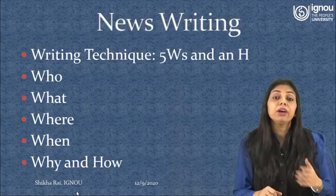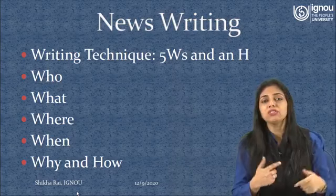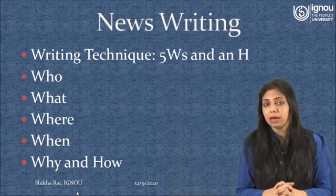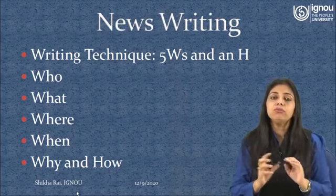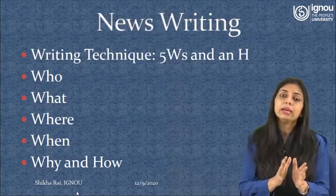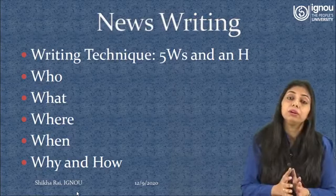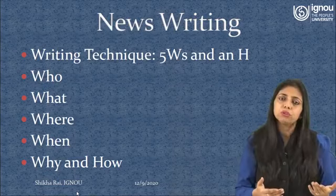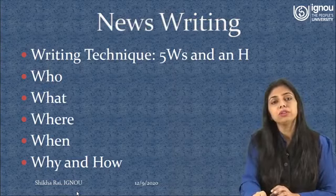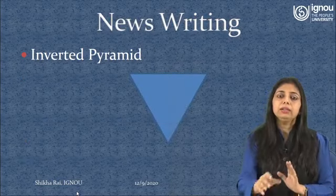Where — is it in the national capital, in some remote village near the sea? When again brings us back to timeliness: the sooner you can report the event, the better it is for you as a media person. Why and how are two factors that get us into the interpretation of an event — why it happened in a certain manner, how it took place in those circumstances, and what could have been done to prevent it or to ensure such events don't get repeated. These are the Five W's and an H, and most stories in newspapers or on the internet will talk about two or more of these factors.